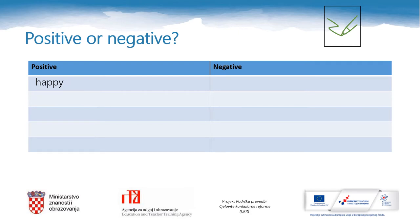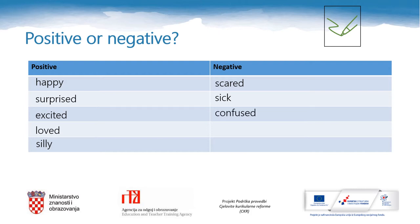Positive: happy, surprised, excited, loved, or silly. Negative: scared, sick, confused, tired, and angry. Can you add one more example in the positive column and one more in the negative one?